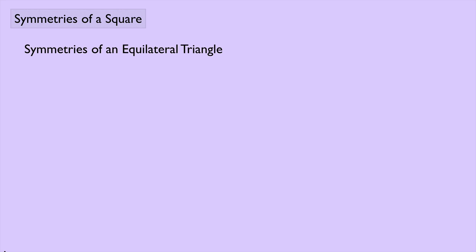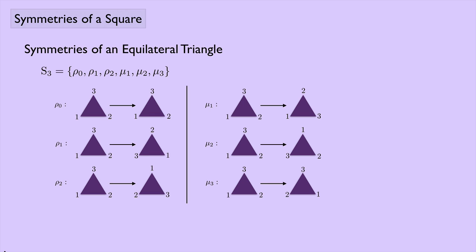We've already seen that the symmetries of an equilateral triangle form a group, and we call that group S3. That group has six elements, and the elements are each functions on the set {1, 2, 3}. We can also think of them as different symmetry operations on the equilateral triangle. This was a non-abelian group of order 6.